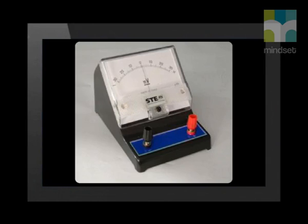A galvanometer is an instrument used to detect, measure, and determine the direction of small electric currents. It is connected across the ends of a conductor. This is what a zero-centered galvanometer looks like. The needle can either deflect to the left or to the right of zero. The deflection is determined by the size of the induced EMF and also by the direction of the motion.